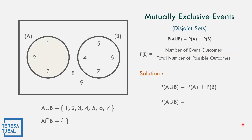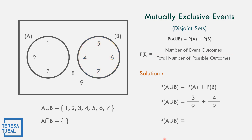The probability of A is 3 over 9 — because event A has elements 1, 2, 3 and the total possible outcomes counting all numbers is 9. The probability of B is 4 over 9. So 3 plus 4 equals 7, with the same denominator. The probability of A union B equals 7 over 9.